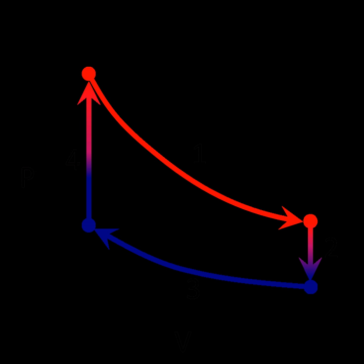The PV diagram is a particularly useful visualization of a quasi-static process, because the area under the curve of a process is the amount of work done by the system during that process. Thus work is considered to be a process variable, as its exact value depends on the particular path taken between the start and end points of the process. Similarly, heat may be transferred during a process, and it too is a process variable.